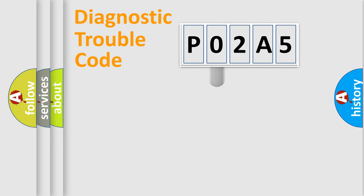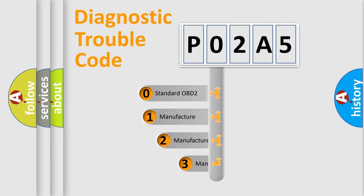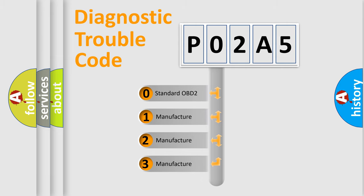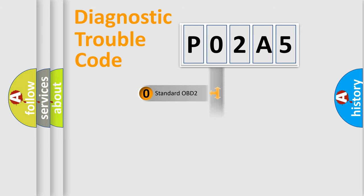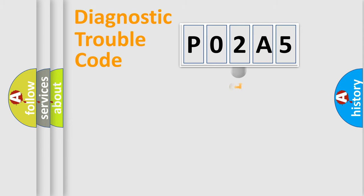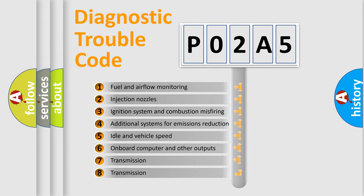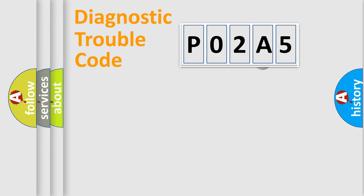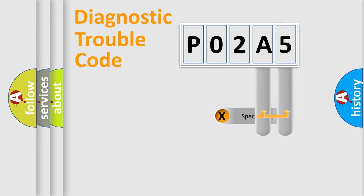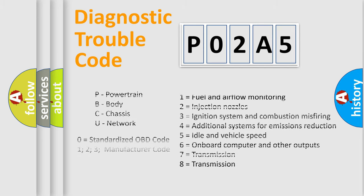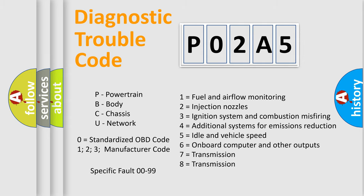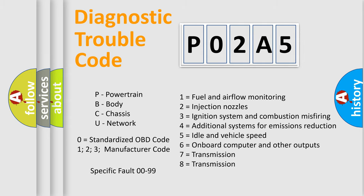This distribution is defined in the first character of the code. If the second character is expressed as zero, it is a standardized error. In the case of numbers 1, 2, or 3, it is a more specific expression of a car-specific error. The third character specifies a subset of errors. The distribution shown is valid only for the standardized DTC code, and only the last two characters define the specific fault of the group. This division is valid only if the second character code is expressed by the number zero.